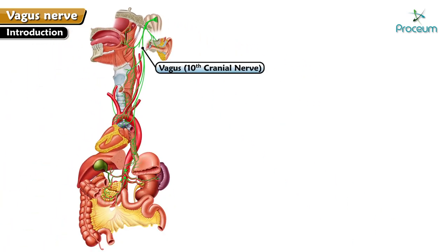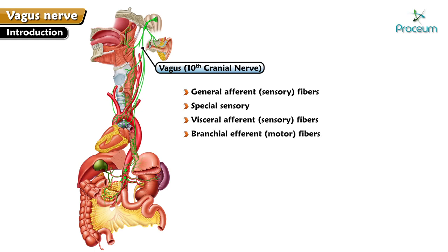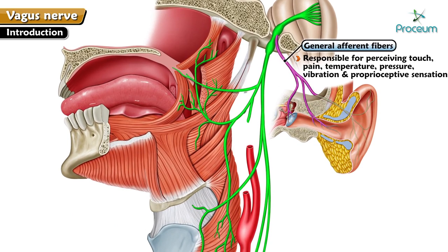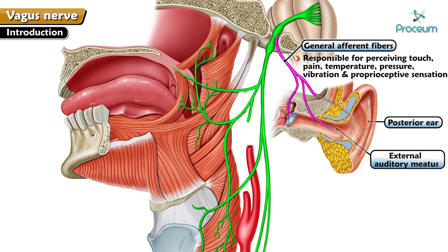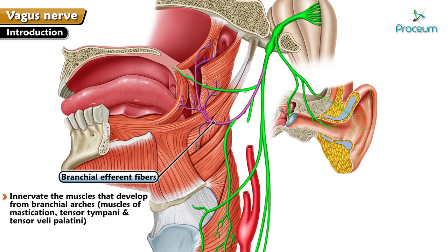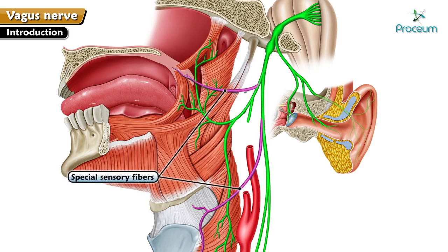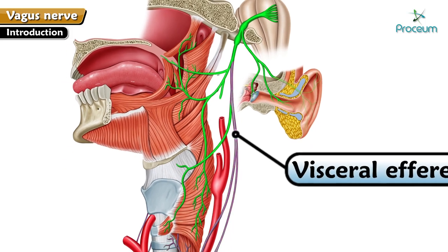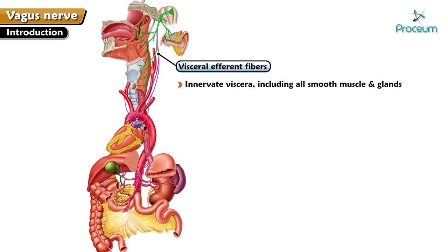The vagus nerve contains general afferent or sensory fibers, special sensory fibers, visceral afferent or sensory fibers, and branchial efferent or motor fibers. General afferent fibers are responsible for perceiving touch, pain, temperature, pressure, vibration, and proprioceptive sensation from the posterior ear, external auditory meatus, and the external surface of the tympanic membrane. Branchial efferent fibers innervate muscles developing from the branchial arches, such as muscles of mastication, the tensor tympani, and tensor veli palatini. Special sensory fibers convey taste from the palate and epiglottis, while visceral efferent fibers innervate the viscera including all smooth muscle and glands.